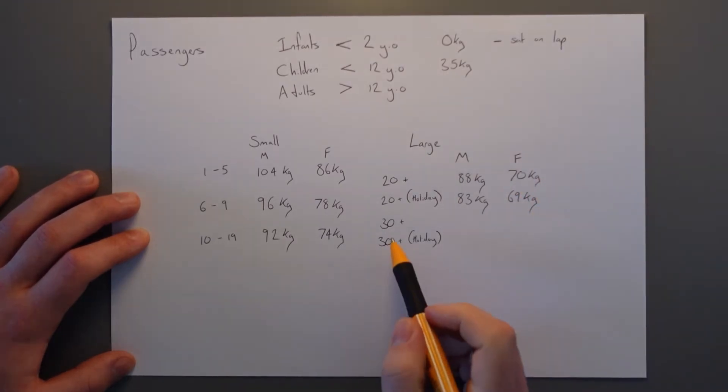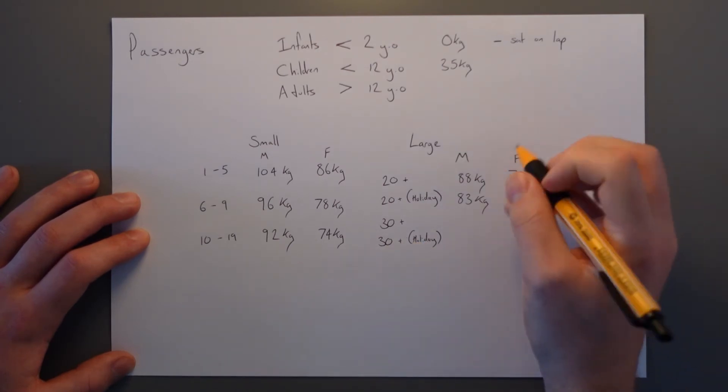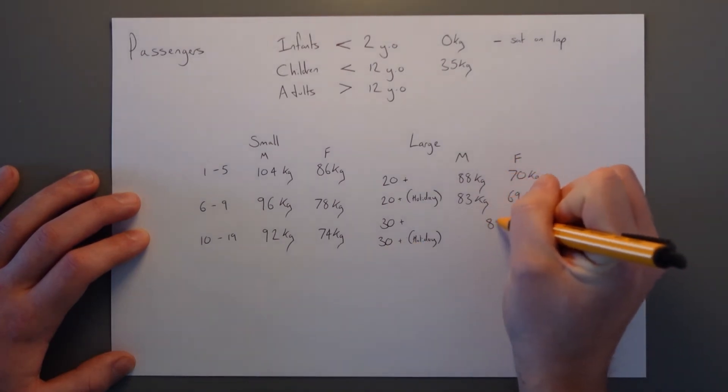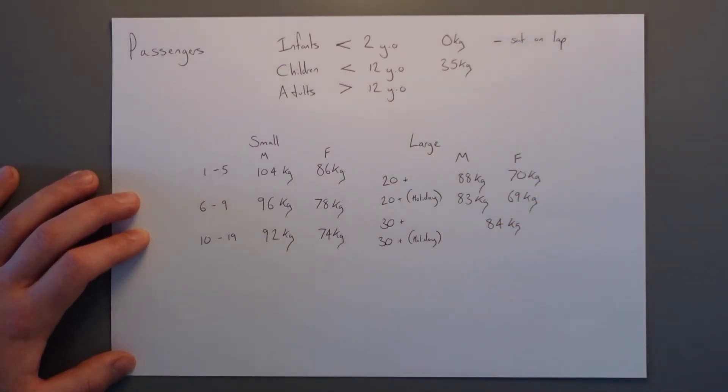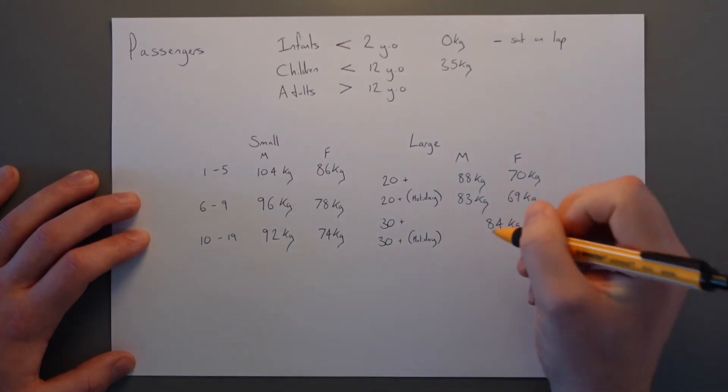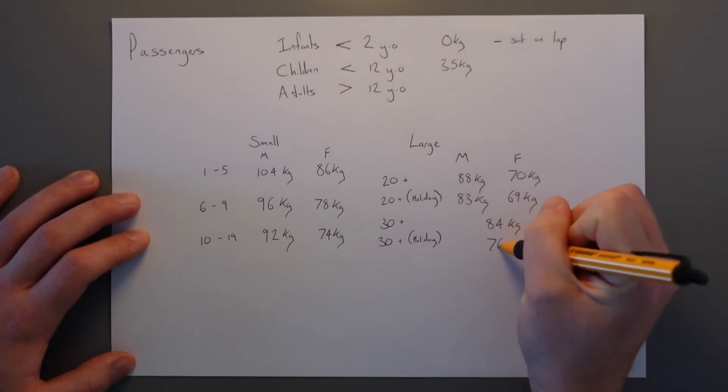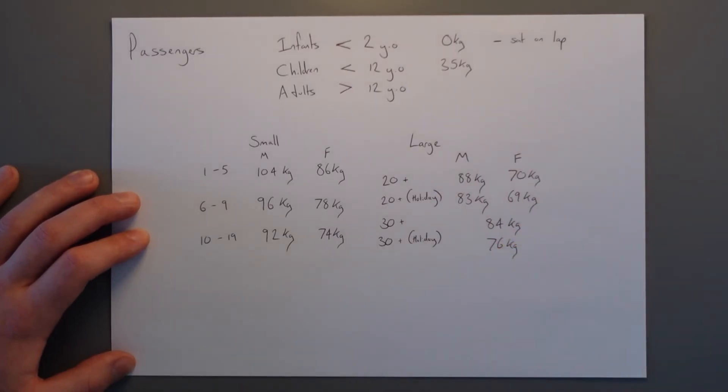In a 30 plus passenger aircraft, all adults, male or female, 84 kg mass. And 30 plus seats holiday charter is 76 kg, all adults. This is the one that we use day to day, actually in the airlines, 84 kg, because we have more than 30 seats. It's not a holiday charter, 84 kg.